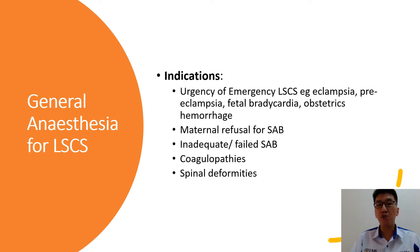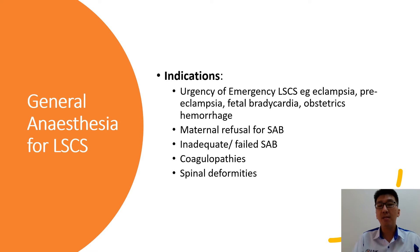The indications for general anesthesia for lower segment Caesarean section are the urgency of the emergency, such as eclampsia, preeclampsia, fetal bradycardia, obstetric hemorrhage, maternal refusal for spinal arachnoid block, inadequate or failed spinal anesthesia or SAB, coagulopathies, and spinal deformities.